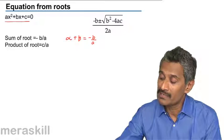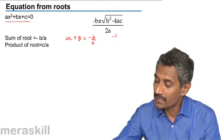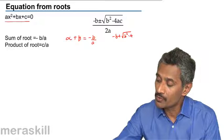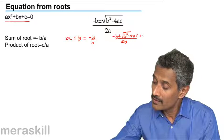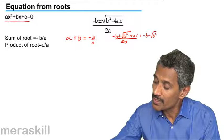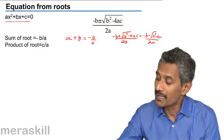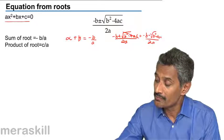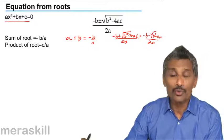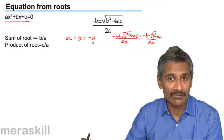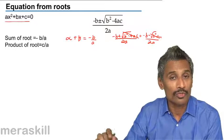If you add alpha, which is minus b plus root of b squared minus 4ac over 2a, and beta, which is minus b minus root of b squared minus 4ac over 2a, the radical parts cancel and you get minus 2b over 2a, which is the same as minus b over a. So whenever you add the roots of a quadratic equation, the sum will always be negative of the coefficient of x upon the coefficient of x squared.